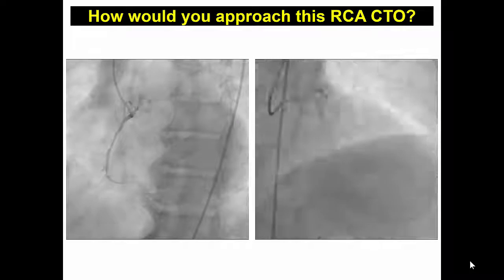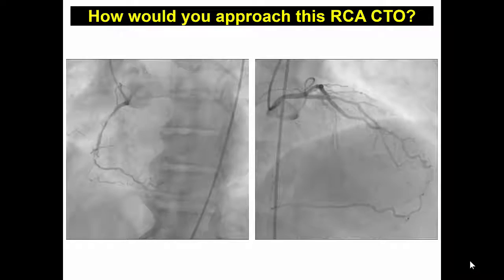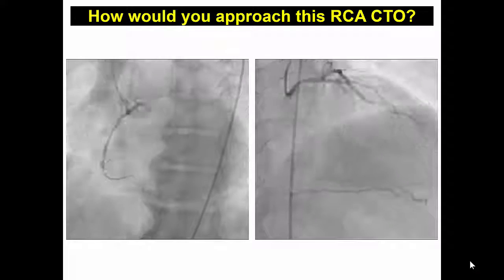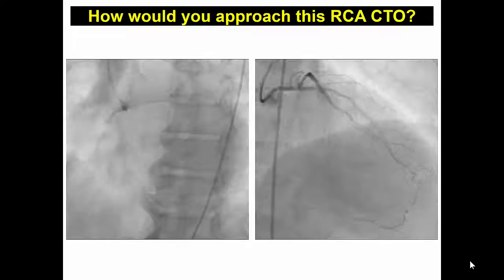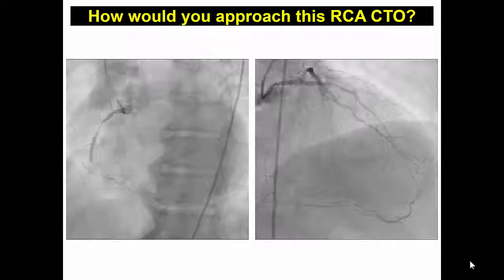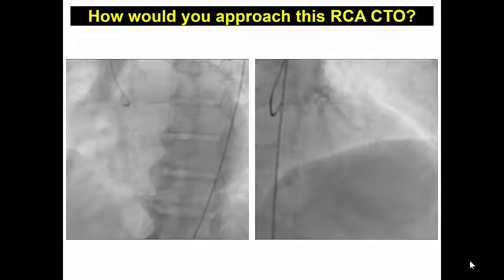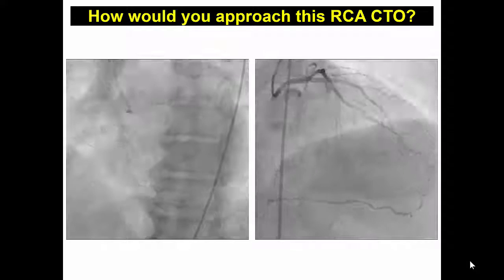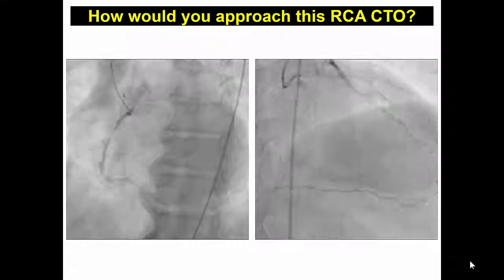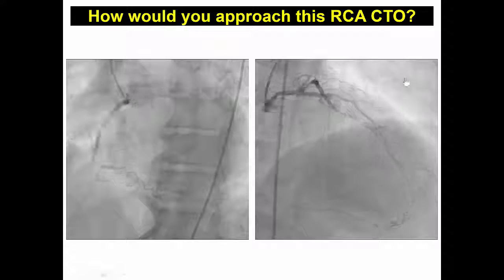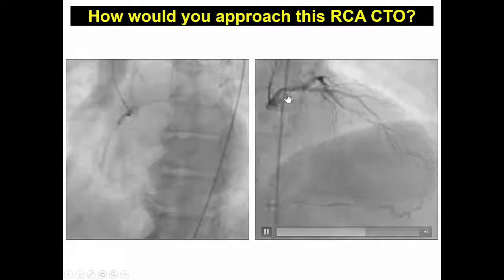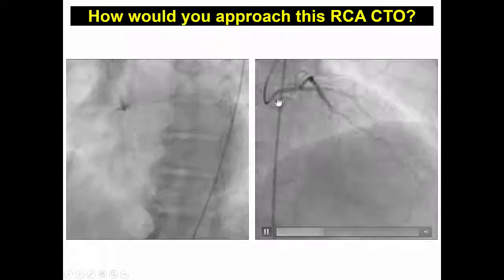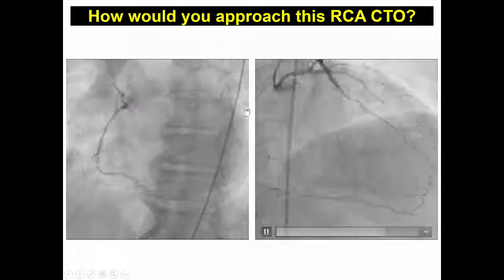This patient was referred to our institution for re-canalizing the right coronary artery CTO. It was a patient with diabetes, 65 years old, and refractory angina despite optimal medical management. However, upon looking more carefully at the donor vessel, the left main, there appears to be some disease in the ostium of the left main.